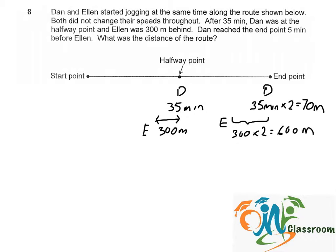Dan reached the end point 5 minutes before Alan, meaning Alan requires another 5 minutes to reach the end point. So the time taken for Alan to travel this remaining 600 meters would be 5 minutes.